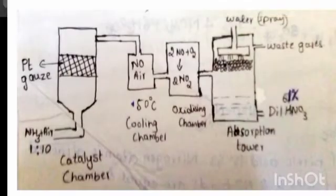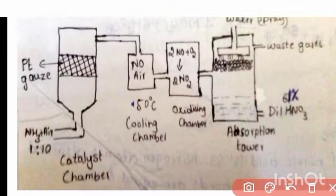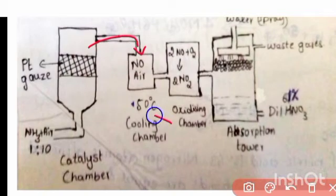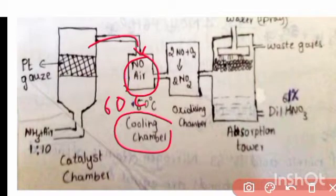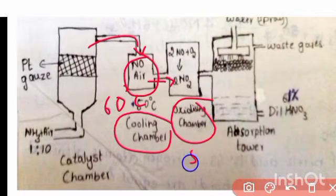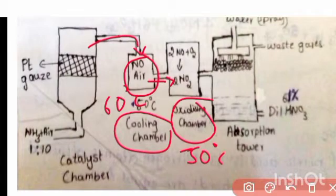In the next step, the nitric oxide is passed through a cooling chamber maintained at 60 degrees Celsius to reduce its temperature. Then the nitric oxide is passed to an oxidizing chamber where the temperature is 50 degrees Celsius, and here nitric oxide reacts with oxygen to form nitrogen dioxide (NO₂).